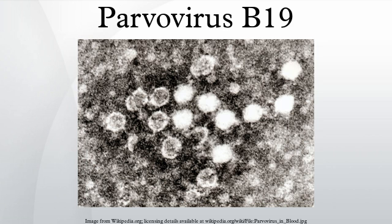Arthritis: in adults, Parvovirus B19 can lead to a seronegative arthritis which is usually easily controlled with analgesics. Women are approximately twice as likely as men to experience arthritis after parvovirus infection. Possibly up to 15% of all new cases of arthritis are due to parvovirus, and a history of recent contact with a patient and positive serology generally confirms the diagnosis. This arthritis does not progress to other forms of arthritis. Typically joint symptoms last 1 to 3 weeks, but in 10 to 20% of those affected, it may last weeks to months.